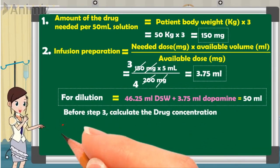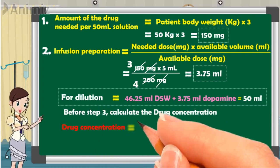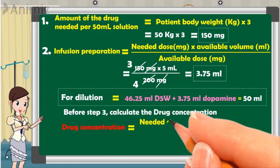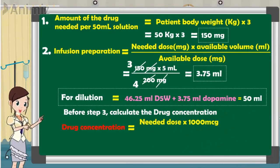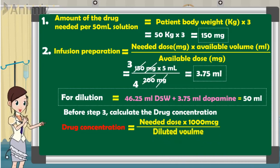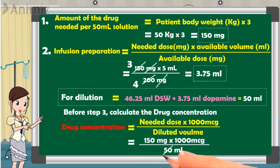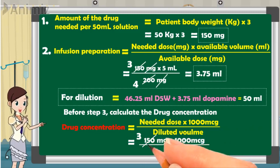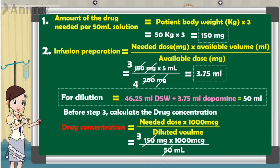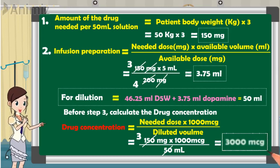Before going to Step 3, we need to calculate the drug concentration. The drug concentration equals the needed dose of 150 milligrams multiplied by 1000 micrograms, divided by the diluted solution volume of 50 ml. Simplifying by crossing the 50s: 3 multiplied by 1000 gives a drug concentration of 3000 micrograms per ml.